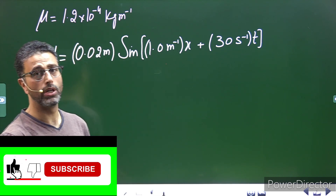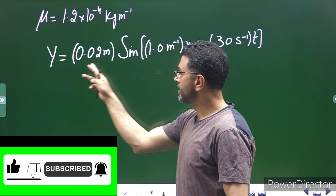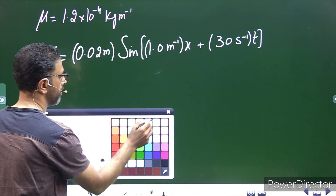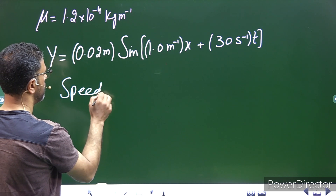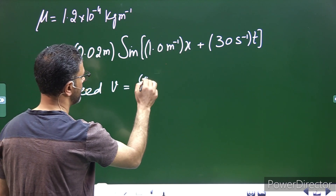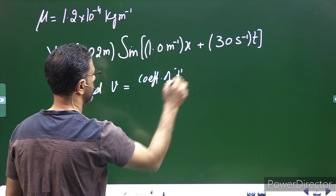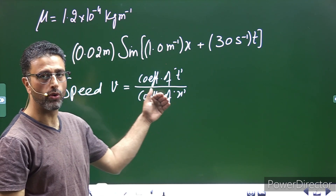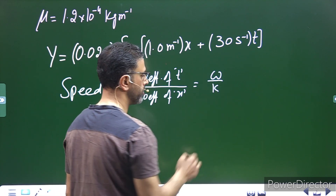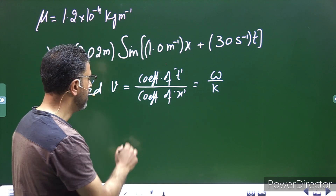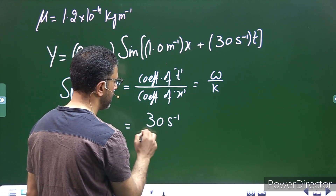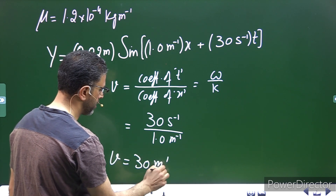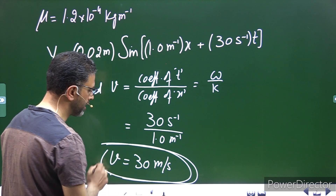हमें mu दिया हुआ है, mass per unit length जो है, वो दिया हुआ है. हम इस equation से speed निकालते हैं, फिर जाके mu यूज करके tension निकाल दिएंगे. Speed of a traveling wave — coefficient of t divided by coefficient of x — omega divided by k के बराबर होता है, where omega is angular frequency and k is angular wave number. So, coefficient of t is 30 per second, divided by coefficient of x, that is 1.0 per meter. So, speed जो है, वो 30 meter per second के बराबर है.